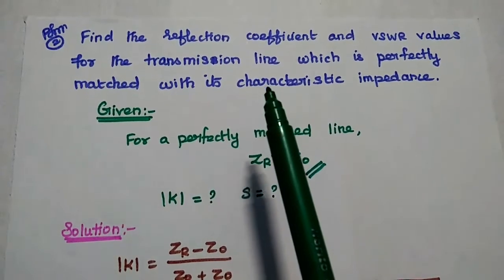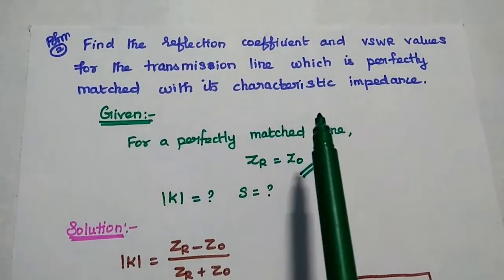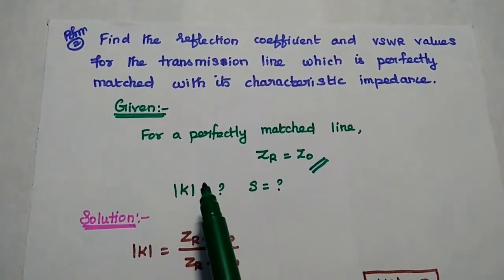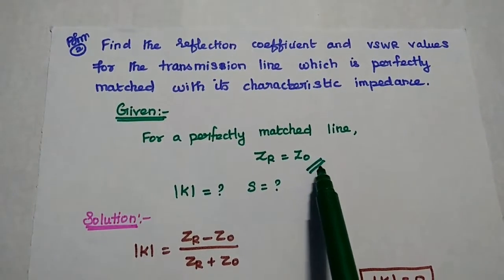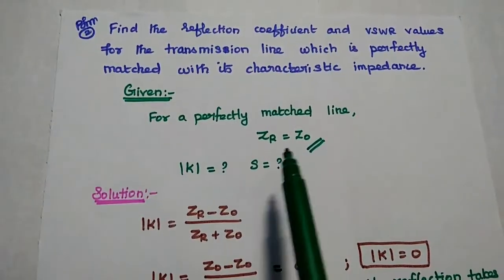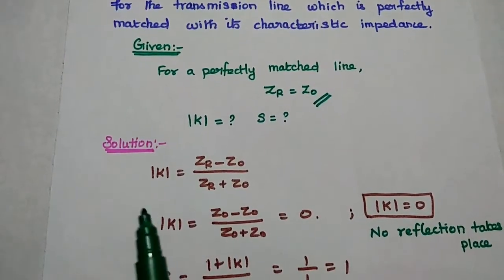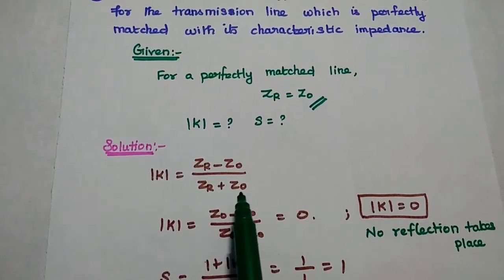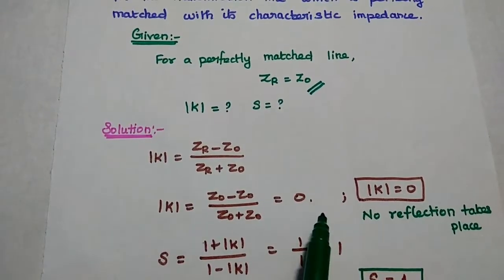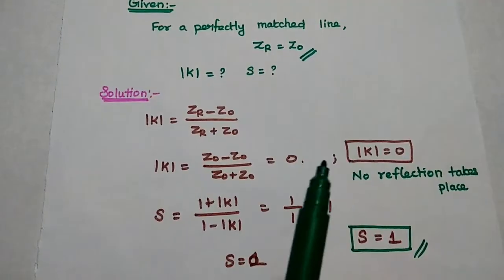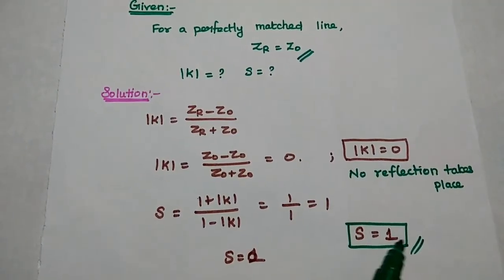Next problem: Find the reflection coefficient and VSWR values for a transmission line which is perfectly matched with its characteristic impedance. For a perfectly matched line, the receiving end impedance equals the characteristic impedance. Using K equal to ZR minus Z0 divided by ZR plus Z0, since ZR equals Z0, we get K equal to 0 — meaning no reflection takes place. Substituting, S equals 1 plus 0 divided by 1 minus 0, so S equals 1.